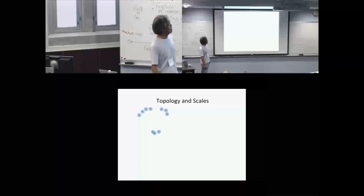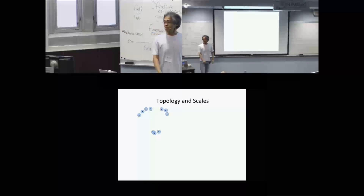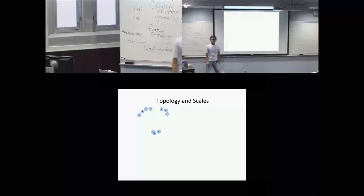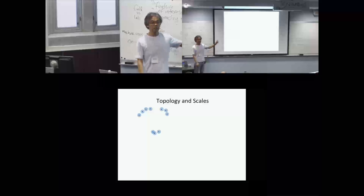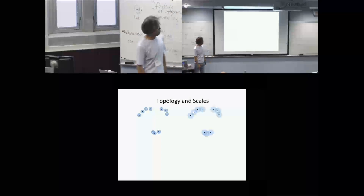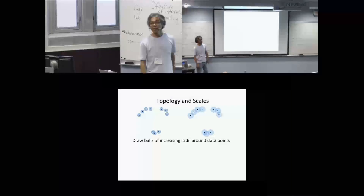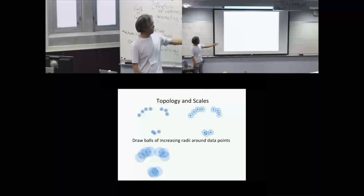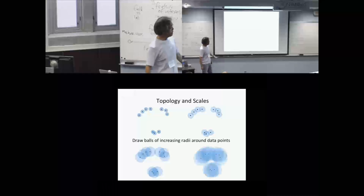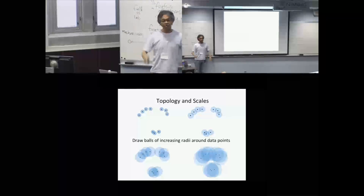To introduce the notion of scale, take a radius epsilon and around each data point draw a ball of radius epsilon. Think of the data as the union of these blue balls. At a fairly small radius, perhaps only two points get joined, giving nine connected components. As you continuously increase the radius, you see three components, then two, and eventually everything comes together. There's no interesting information after the scales get too large. The question is how do you really summarize this?